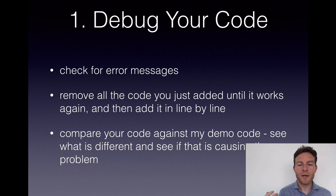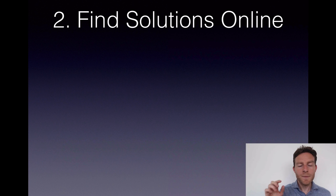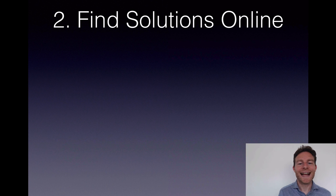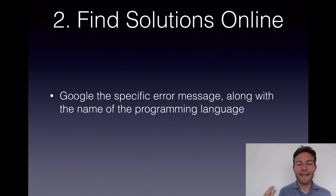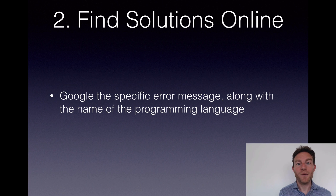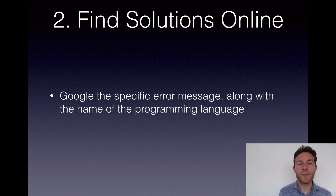So what if you've done all this debugging and you still can't get it working? Well, step two — and this is what makes you a real programmer — is learning how to find solutions online. It's pretty straightforward really: it is just Googling. My general approach is to Google the specific error message that you've got. If you don't have an error message, then get one either from the compiler, from the browser, from Xcode, whatever it is, and then Google that along with the name of the programming language.